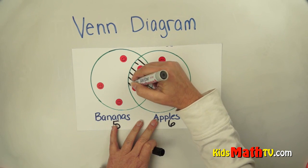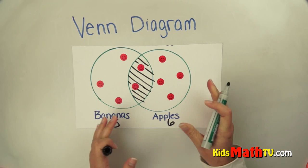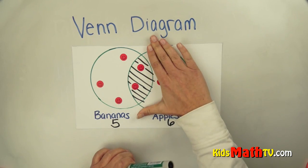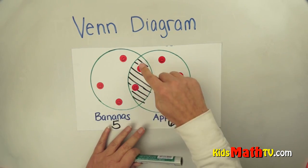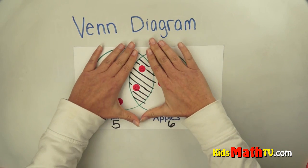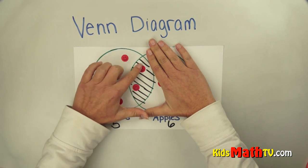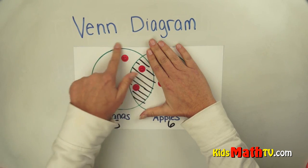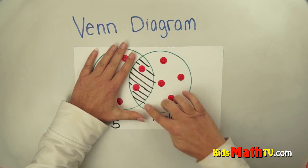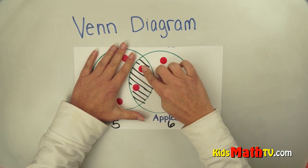This area right here is actually in both circles. It is in the banana circle and the apple circle. And there are 2 people in that space. So these 2 people like bananas and they also like apples. They like both of them.